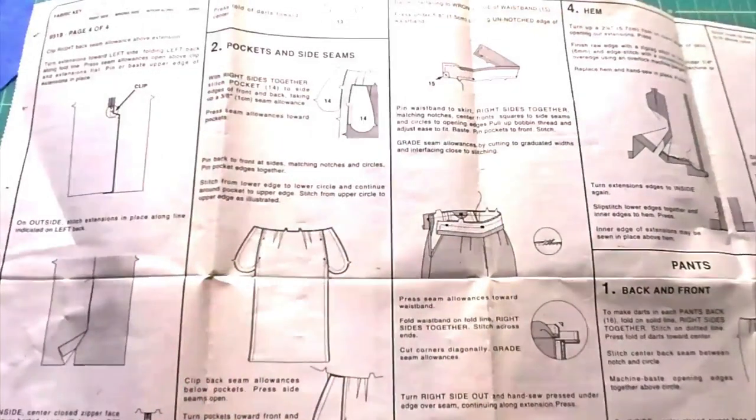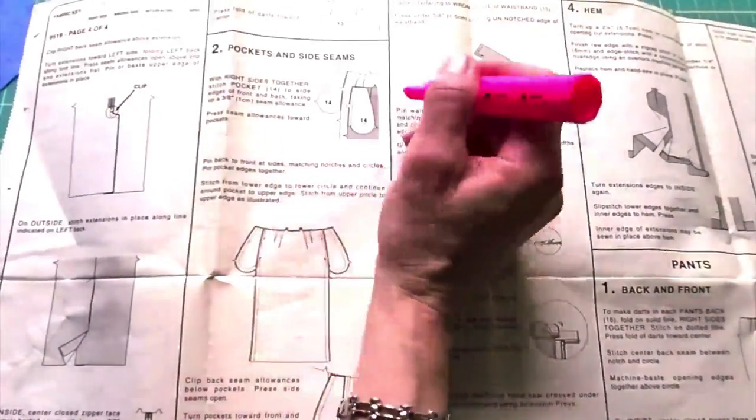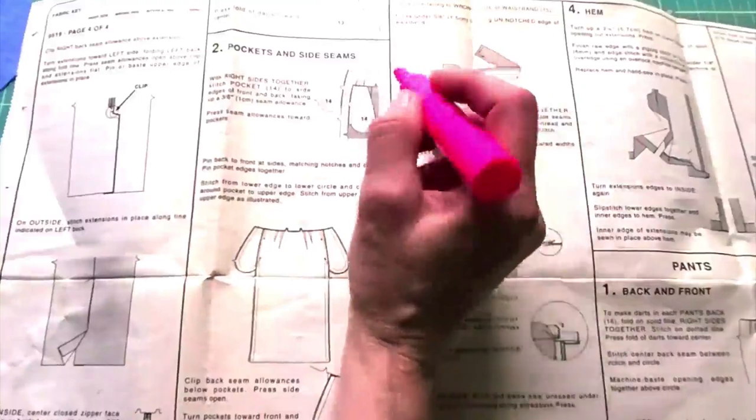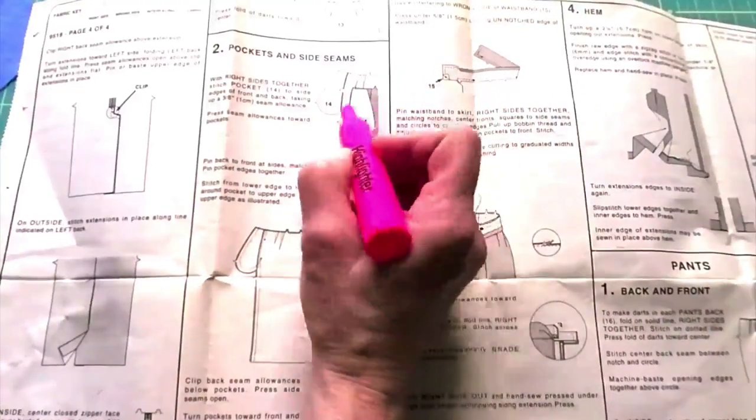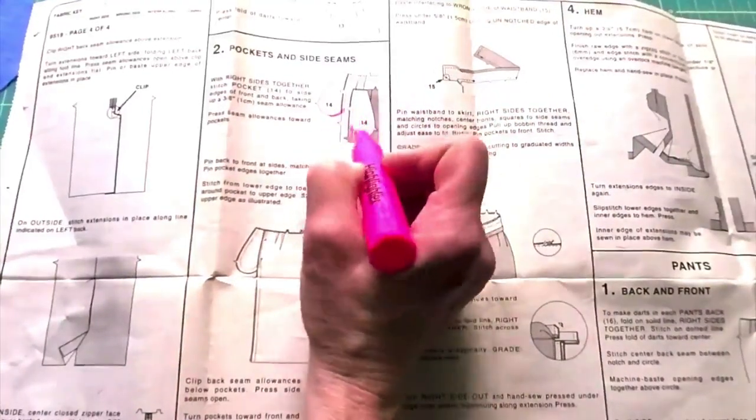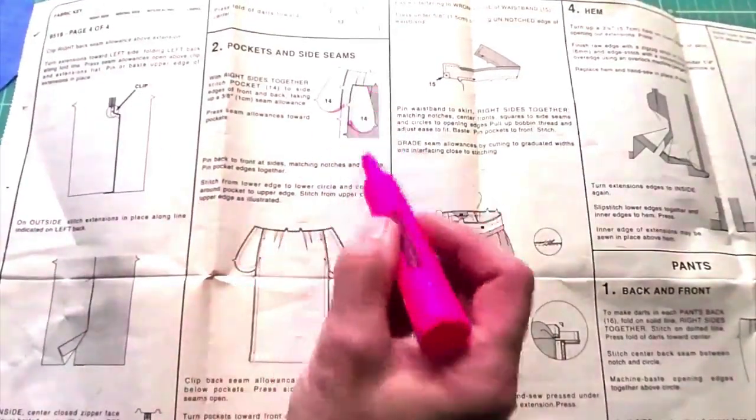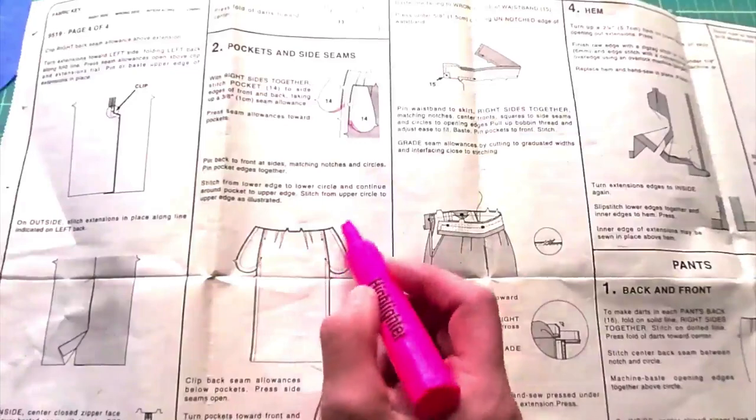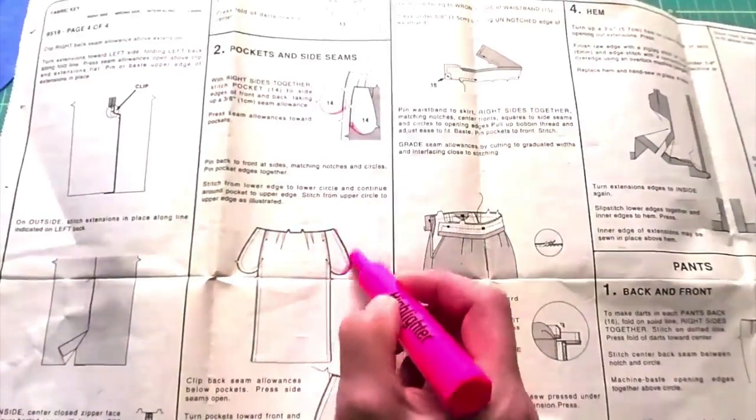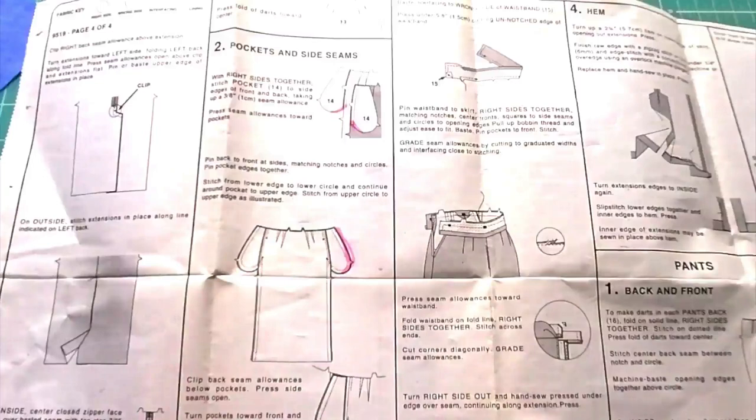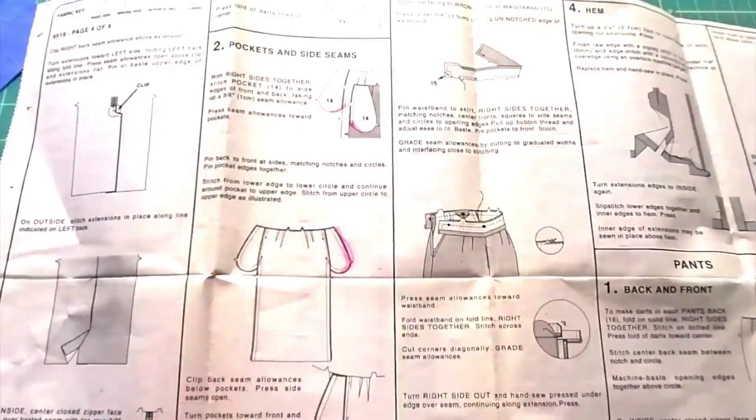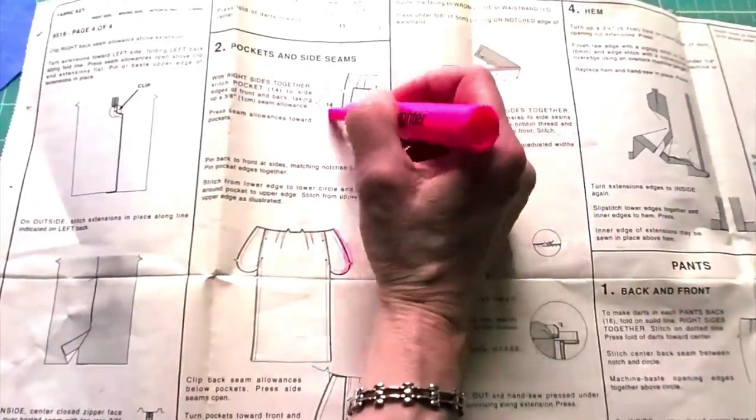But they don't tell you when to serge your edges or finish your edges in whatever method you choose. So what I'm adding here is just a small serge right at the end of those two pockets, so that when we put them together you'll be able to serge the rest of this as one layer. You won't have two layers of serging there adding extra bulk.